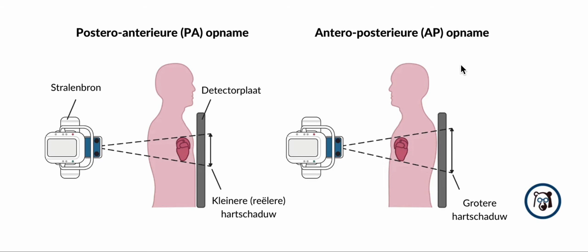That is not to say that an AP view is completely useless. If you have a comparable AP view, you can actually detect differences in heart size — maybe a patient has a significant pericardial effusion, or cardiac dilatation due to other causes. So it's not to say that an AP view is completely useless with regard to interpreting the size of the heart; it's to say that the PA view is way more accurate.